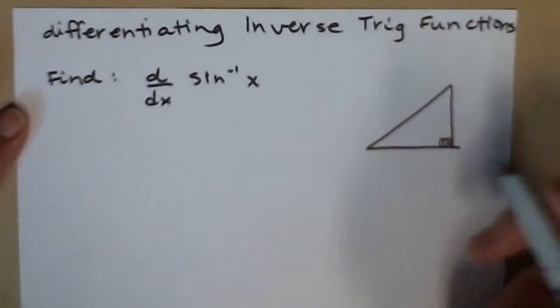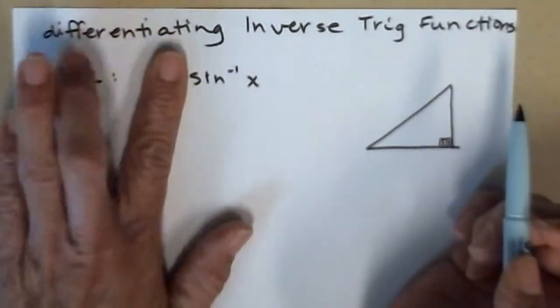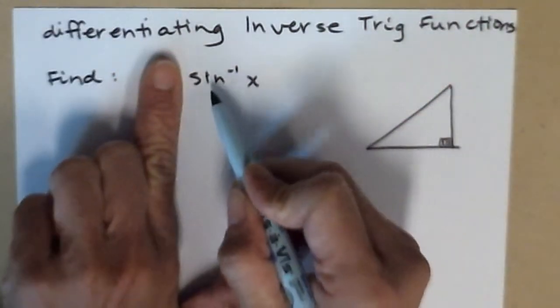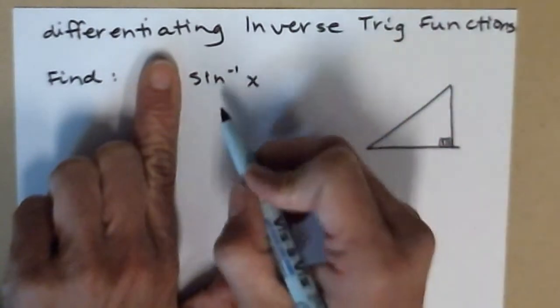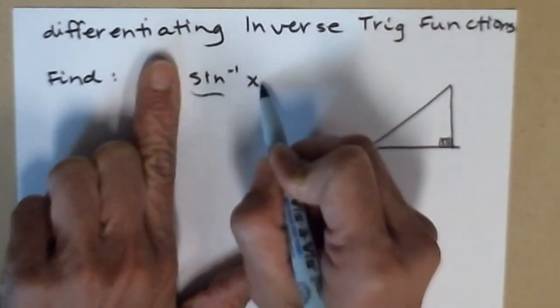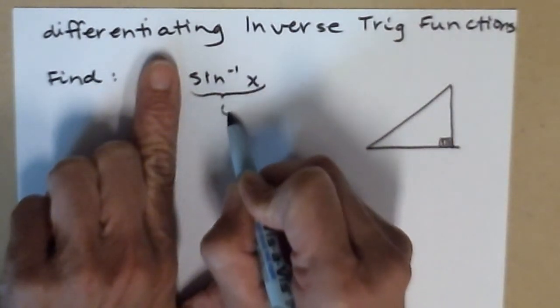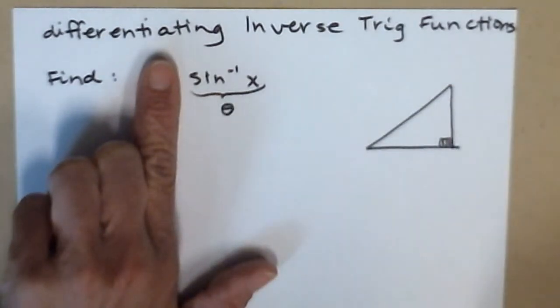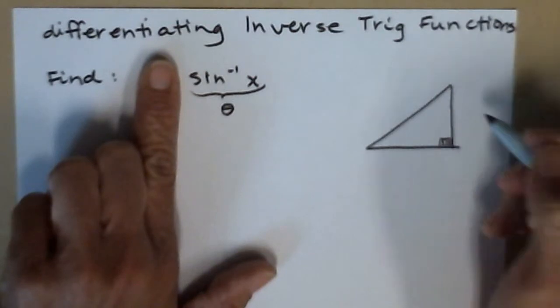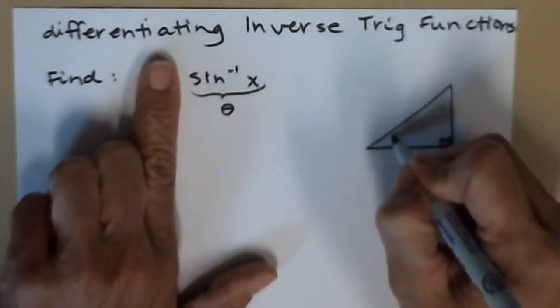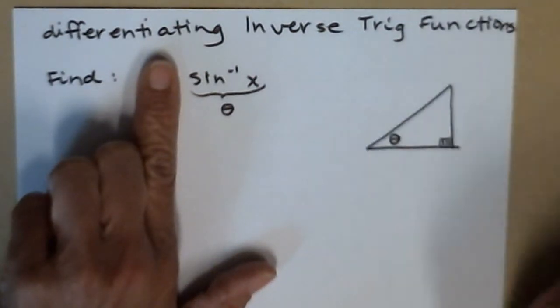Here's what we need to remember. An inverse trig function is actually an angle. So I'm going to rename this inverse sine of x with an angle name. Theta is a great angle name, so I'm going to call that theta. Then I'm going to go over to my right triangle and pick one of my acute angles to be theta.